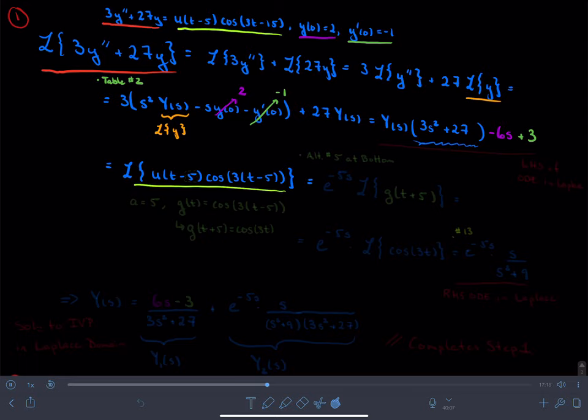I go to my table, I look at the formulas, I recognize that there are three places that the step function appears. It appears by itself in table entry 19, it appears multiplying an f of t minus a function, a function that's already been shifted in the time domain in table entry number 5.